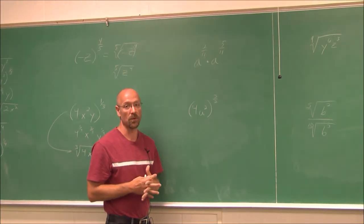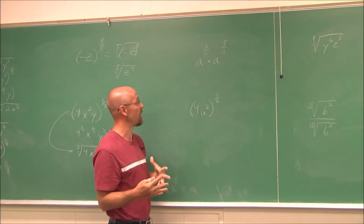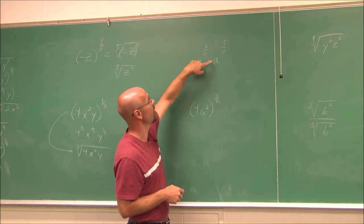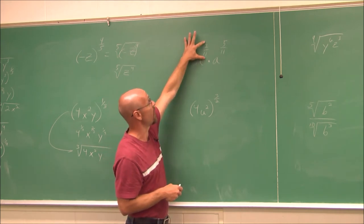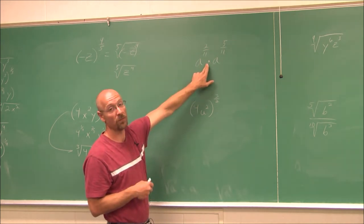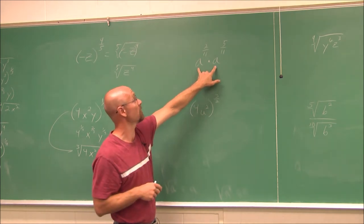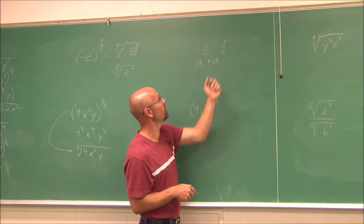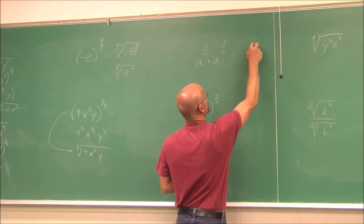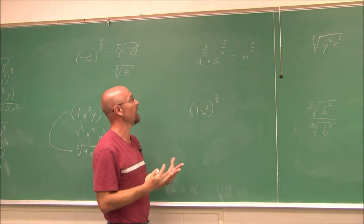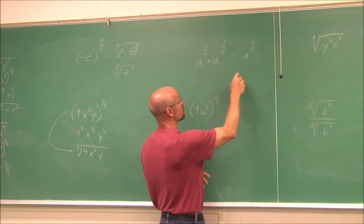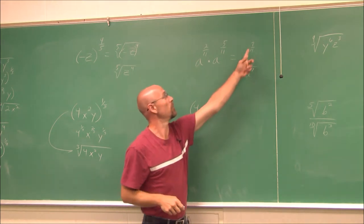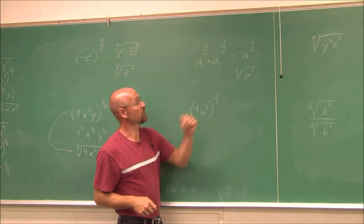Let's apply our rules of exponents to simplify. Here we have a to the 2/11 times a to the 5/11. These are rational exponents, and when multiplying with the same base, our rules of exponents say we can just add them. Since they already have the same denominator, 2/11 plus 5/11 gives a to the 7/11. If we want to write it as a radical, the index is 11, so it's the 11th root of a to the 7th power.